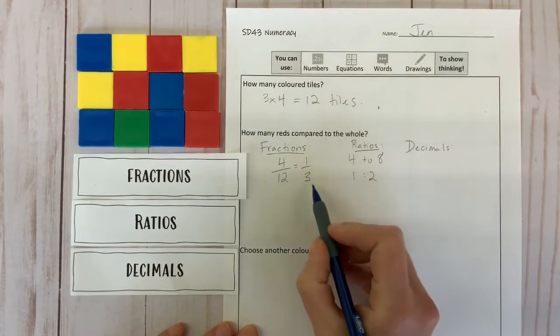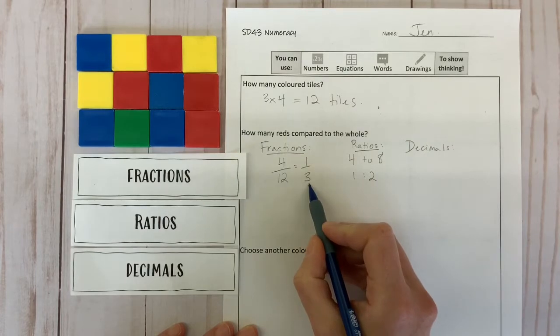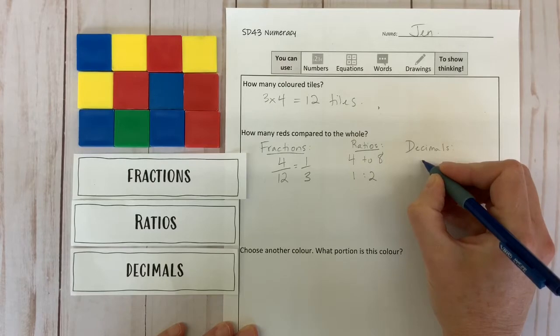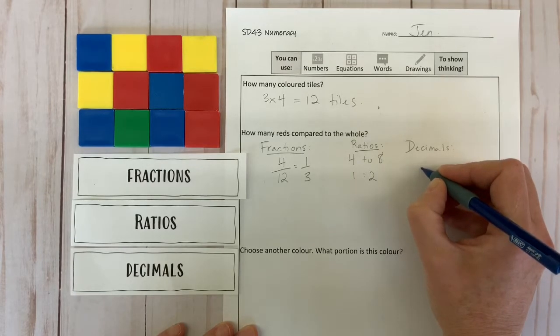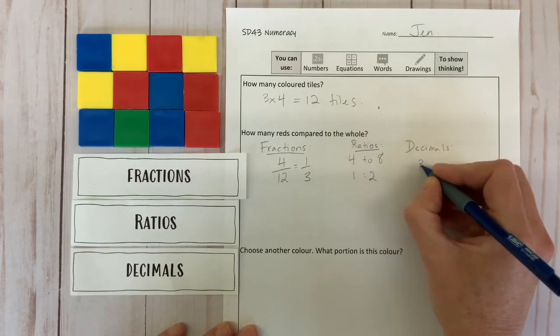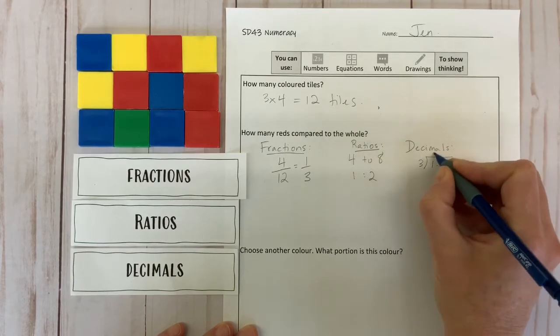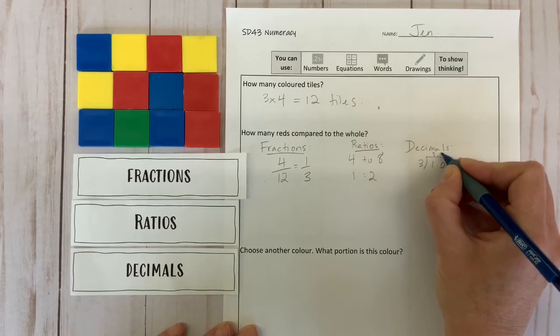Now, we already know the fraction of red tiles, one-third, right? We just need to convert this fraction into a decimal. It's possible that you've had enough experience with decimals that you just know that one-third is 0.3333333, etc. But if not, you can use division to figure it out.